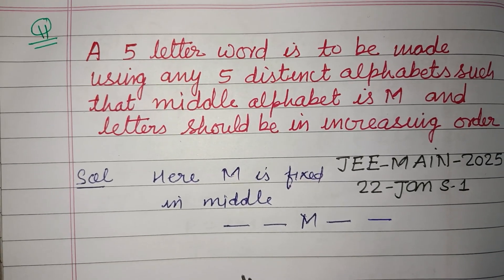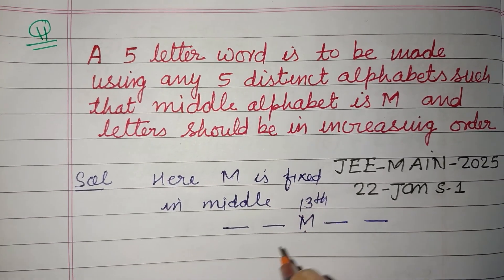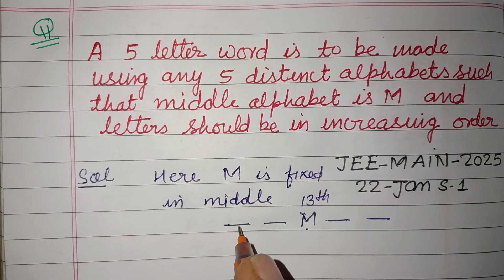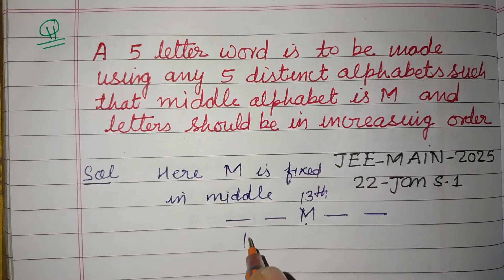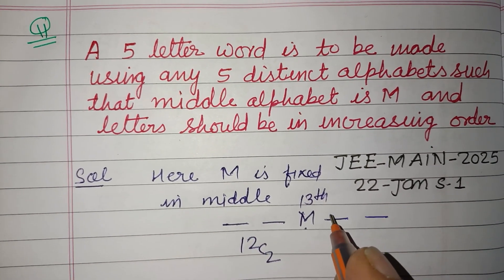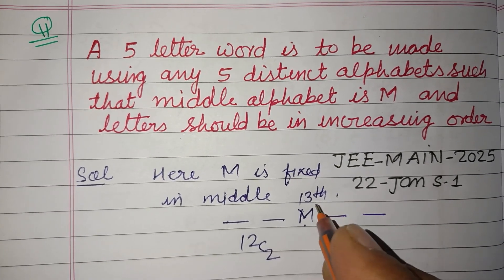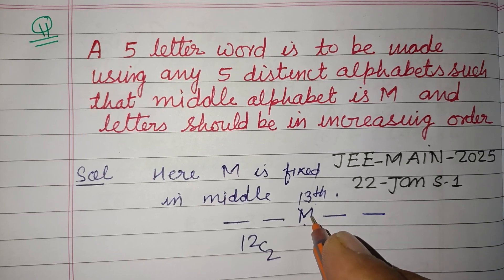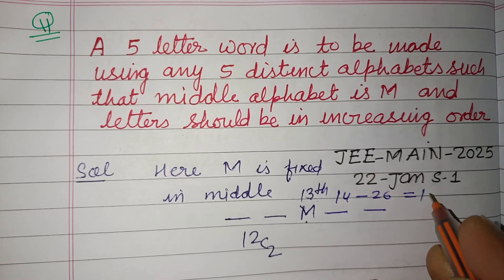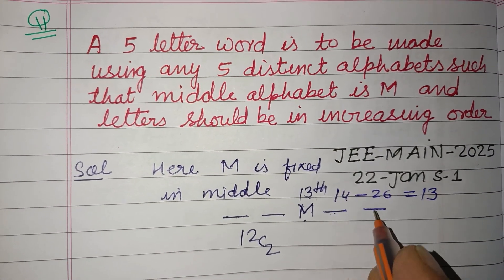The alphabet has 26 letters and M is in the 13th place. So there are 12 letters before M, which can be placed in the two front positions in 12C2 ways. And the 13 letters after M (positions 14 to 26) can be placed in the two back positions in 13C2 ways.